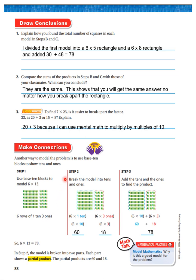Step 2: Break the model into tens and ones. 6 tens - I broke it into 6 tens. 6 times 10 is 60. 3 ones - 6 rows of 3 ones. 6 times 3 is 18. So now 6 times 10 plus 6 times 3 equals 60 plus 18. The answer is 78.